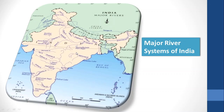Next, the east-flowing rivers. Mahanadi also originates from the central highlands, flows eastward, and falls into the Bay of Bengal. Godavari is also known as Dakshin Ganga — it is the largest river in the Peninsular Plateau. It originates from the Western Ghats, flows eastward, and falls into the Bay of Bengal.